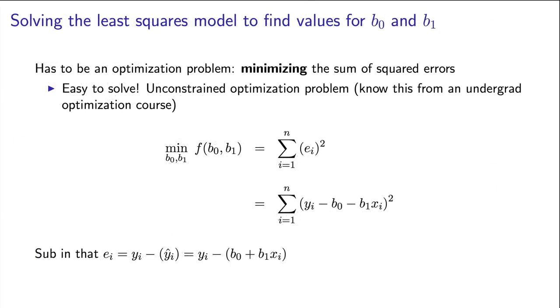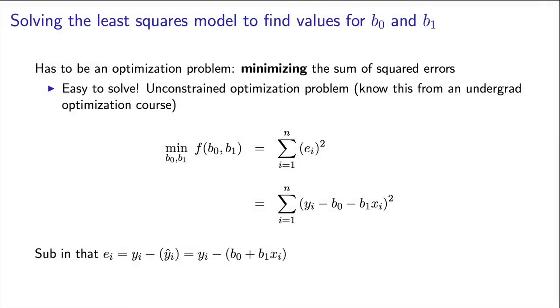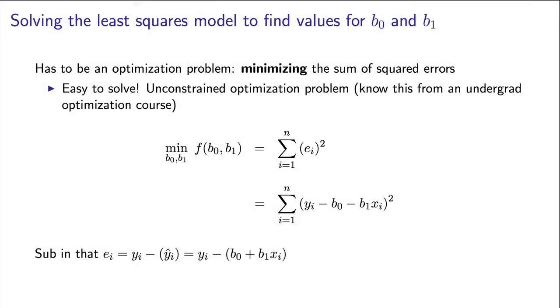So I'm going to work with you next on solving the least squares model. The important point to realize is that it is actually an optimization problem that we're trying to solve, where we're aiming to minimize the sum of all the squared errors. We do this over n values of the error that we have. We have n data points, and therefore n errors. Square them, sum them up, and that's our objective that we're trying to minimize.